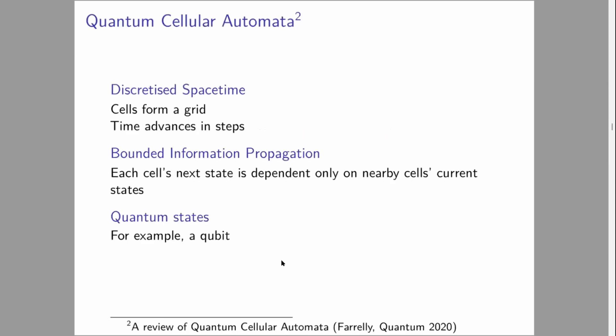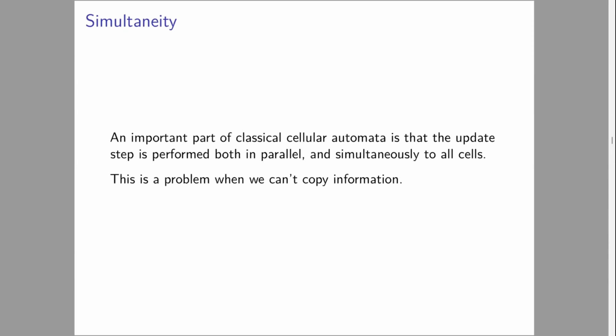Quantum cellular automata. This will hopefully look very familiar. What we want from a quantum cellular automata: We keep discretized space-time, so we still have cells in a grid and time advancing in steps. We keep the bounded information propagation. Each cell's next state depends on its current state and the nearby cells' current states. But we allow those states to now be quantum states, for example, a qubit. Those are desiderata, but it doesn't actually tell us how to make one of these things. There's also a question of simultaneity. In classical cellular automata, we update each cell simultaneously because we're allowed to copy information. We are not allowed to do that in quantum states, so we're going to have to find an interesting way around that.